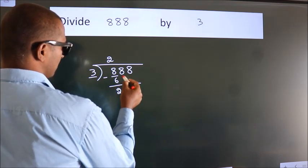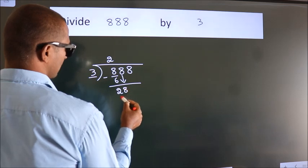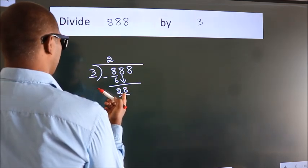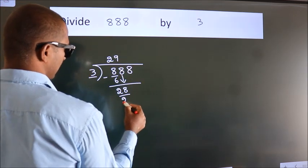After this, bring down the beside number. So 8 down. So 28. A number close to 28 in the 3 table is 3 nines, 27.